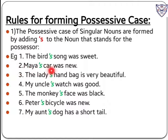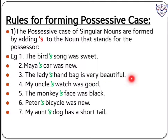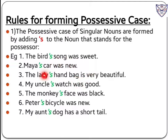Number two: Maya's car was new. Again, apostrophe s is added after Maya to show possession — the car belongs to Maya. Number three: the lady's handbag is very beautiful. Again there is possession or belonging of the handbag with the lady. Therefore after y we put apostrophe s to show the possession — that the handbag belongs to the lady.